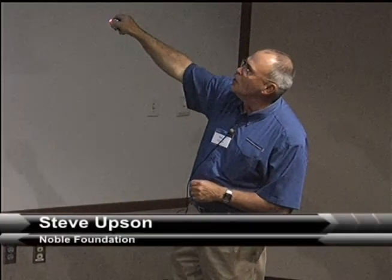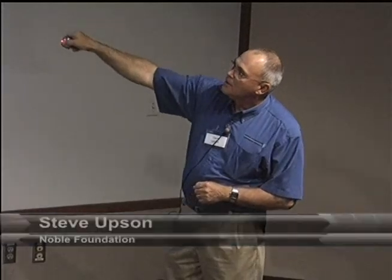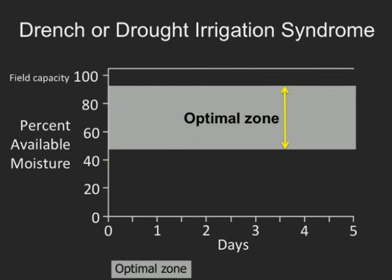This is the optimal zone for plant growth. Along here we have percent available moisture. Did you know that not all moisture in the soil is available to plants? Some of it is so tightly bound when you get really dry that plants can never use it. But this is available moisture from zero to 100 — 100 is field capacity, all the moisture the soil will hold against the force of gravity. And this is timeline.